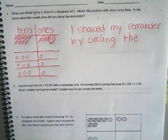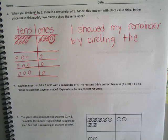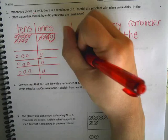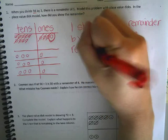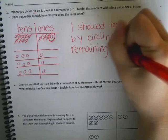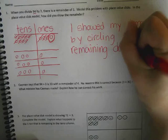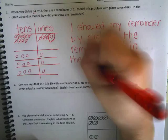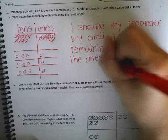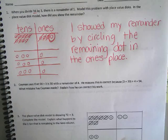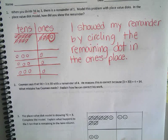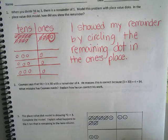Let's write that. I showed my remainder by circling. By circling the remaining — disk. By circling the remaining disk. Let's be super specific: by circling the remaining disk and where? In the ones place. Do you guys think that does a good job of answering our question? Yeah, because they just want to know how we showed it.